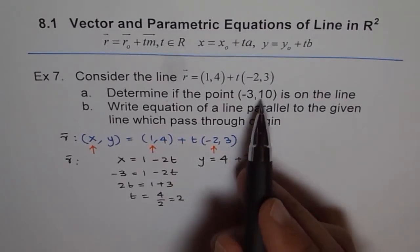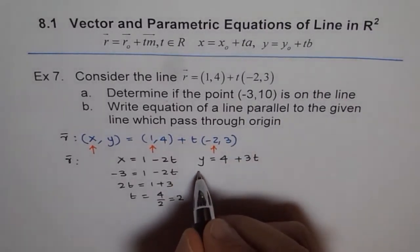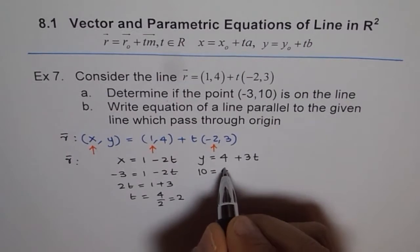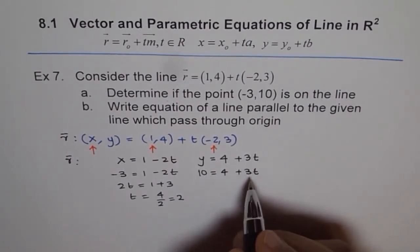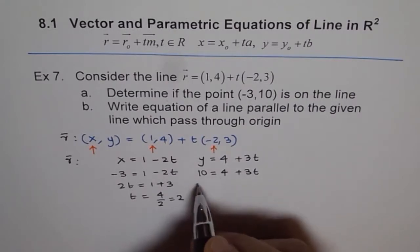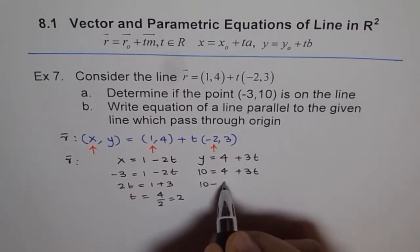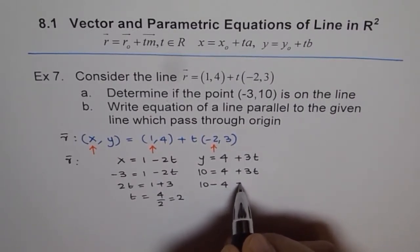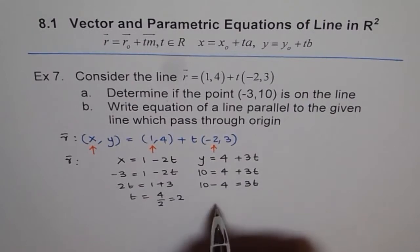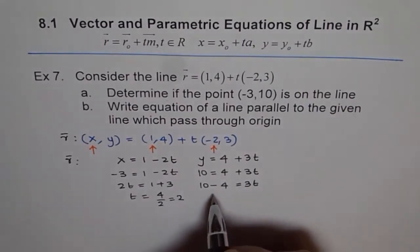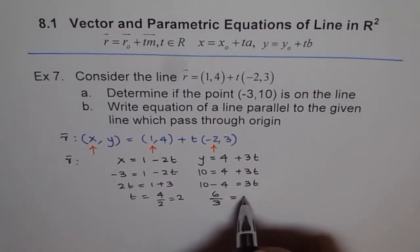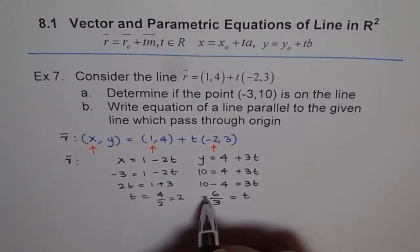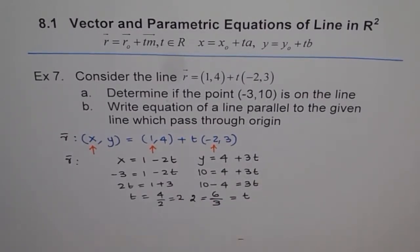The y value given to us is 10, so let's substitute: 10 = 4 + 3T. Bringing 4 to the other side, we get 10 - 4 = 3T, and 10 - 4 is 6, so T = 6 ÷ 3 = 2. We get the same value of T, which is 2.